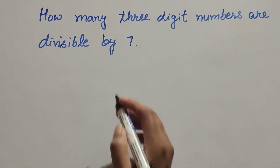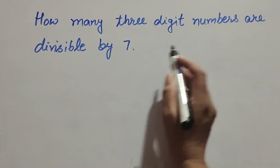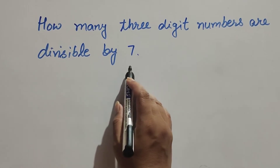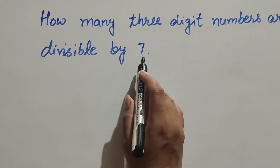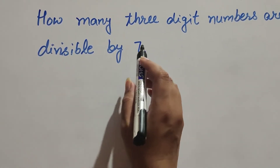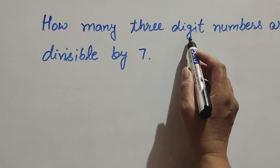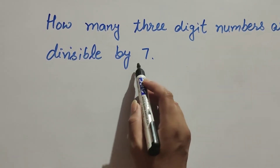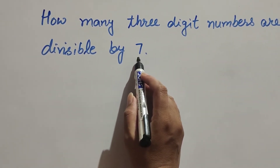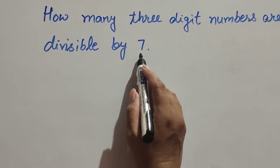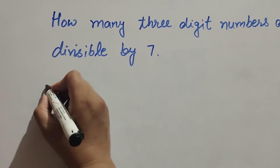Hello friends, welcome to my channel. In this video we discuss how many three-digit numbers are divisible by seven. We need to find all those numbers that are three digits and divisible by seven.